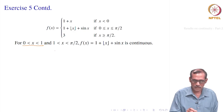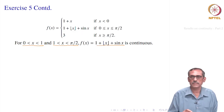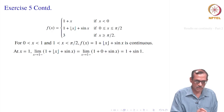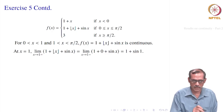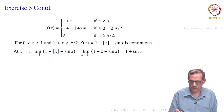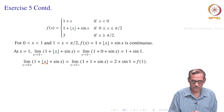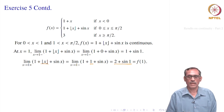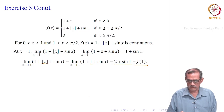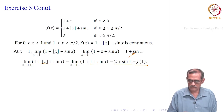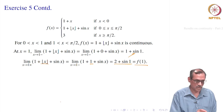For 0 < x < 1 and 1 < x < π/2, the function 1 + ⌊x⌋ + sin(x) is continuous since ⌊x⌋ is constant on those intervals. At x = 1: the left-hand limit is lim(x→1⁻) (1 + ⌊x⌋ + sin x) = 1 + 0 + sin(1) = 1 + sin(1). The right-hand limit is lim(x→1⁺) (1 + ⌊x⌋ + sin x) = 1 + 1 + sin(1) = 2 + sin(1). The function value f(1) = 1 + ⌊1⌋ + sin(1) = 2 + sin(1). Both limits exist but are not equal, so the limit does not exist at x = 1 and f is not continuous at x = 1.